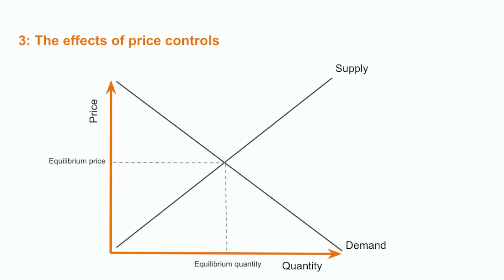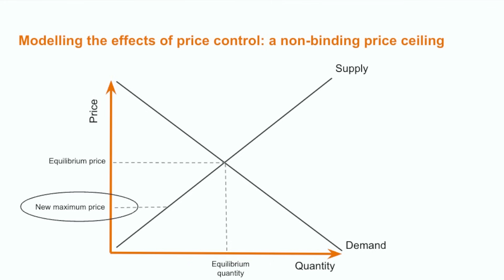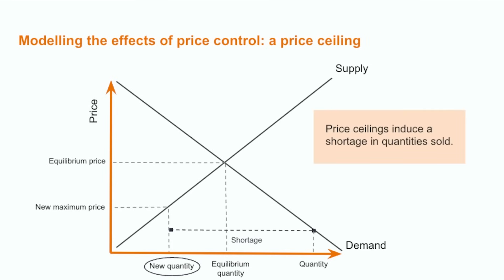Let's analyze the effect of price controls. For a price ceiling, the government fixes a maximum price over which the product cannot be sold. It can be non-binding, meaning that it is above the equilibrium price — in this case, nothing happens, because the equilibrium price is below the new maximum price, and producers would not be willing to propose products at this new price. Generally, the price ceiling is binding, meaning that it is lower than the equilibrium price. Since prices have gone down, the producer will decrease the quantity it produces, as it cannot produce more without placing itself outside of its supply curve. There will hence be a shortage of the product on the market.